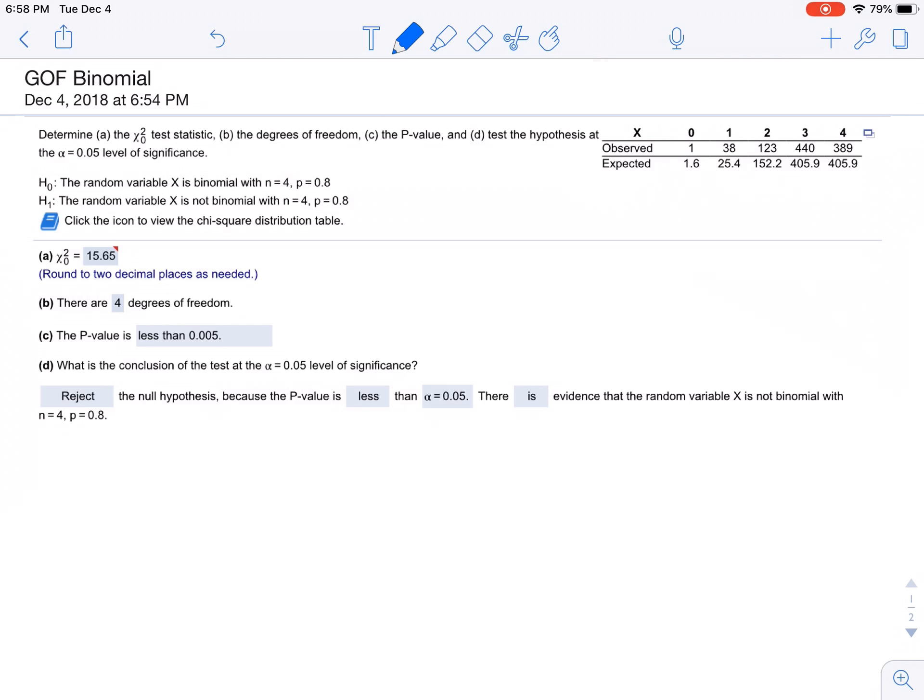We want to know if the data that we gathered, the observed values 138, 123, 440, and 389, if that fits a binomial distribution. So it's a goodness of fit test.